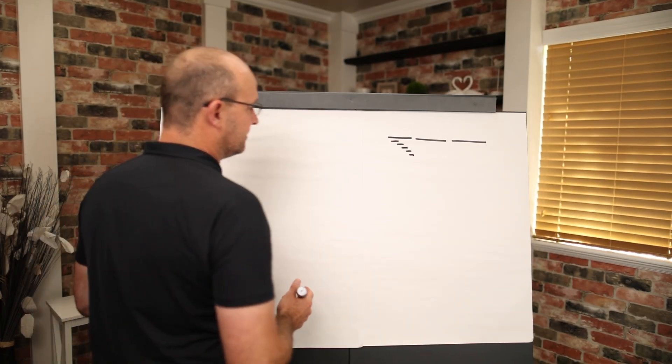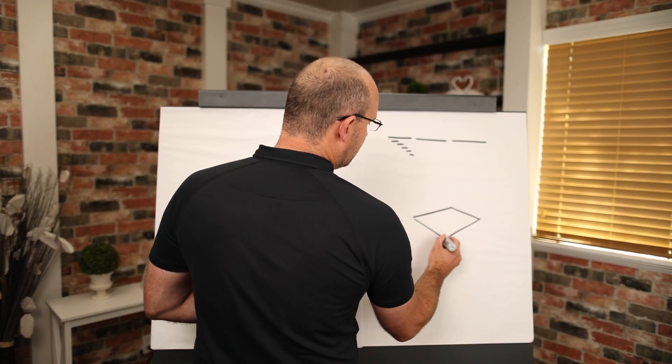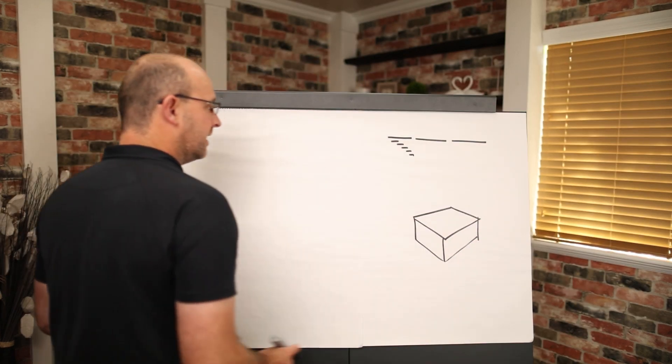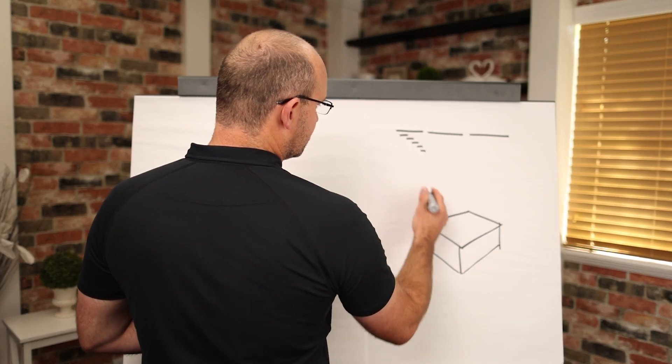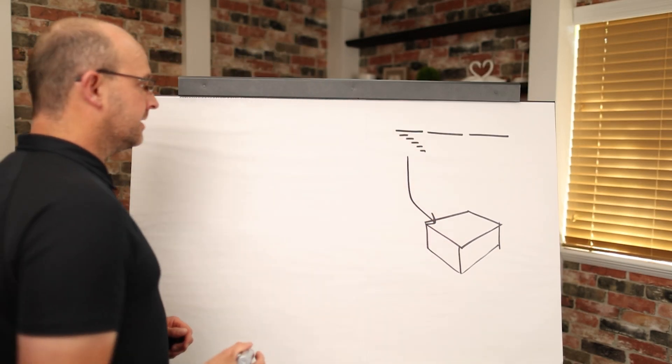The first step in construction management is to say, okay, if I have a building and I want to go, and this could be vertical construction, this could be civil, it could be whatever. But if I have this building, let's say it's the structure and this is the first phase, I need to make a plan.